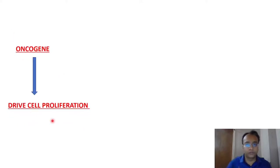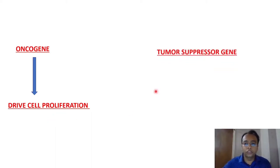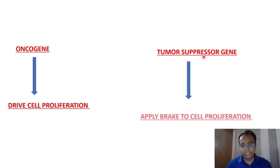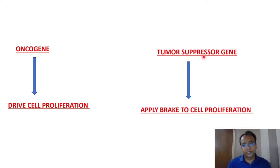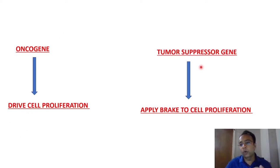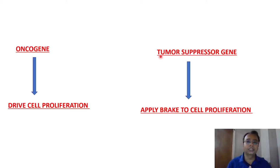Oncogenes mainly drive cell proliferation and lead to cancer formation. Tumor suppressor genes, by contrast, apply a brake to cell proliferation and prevent cancer formation. So if there is a mutation in a tumor suppressor gene, or if one is not working, then cancer can develop.